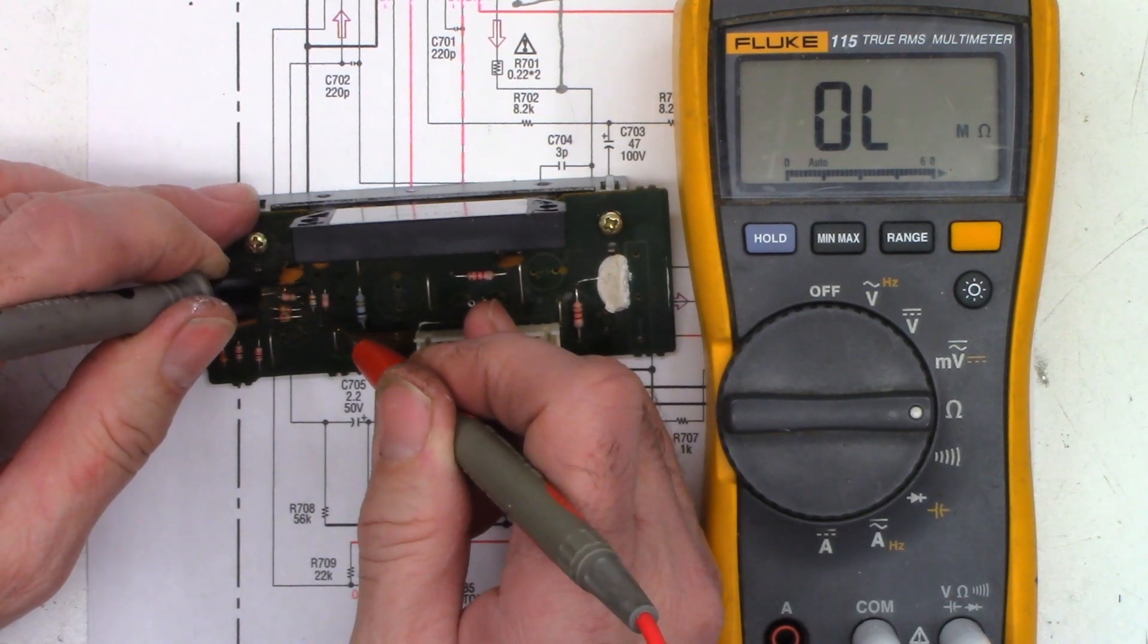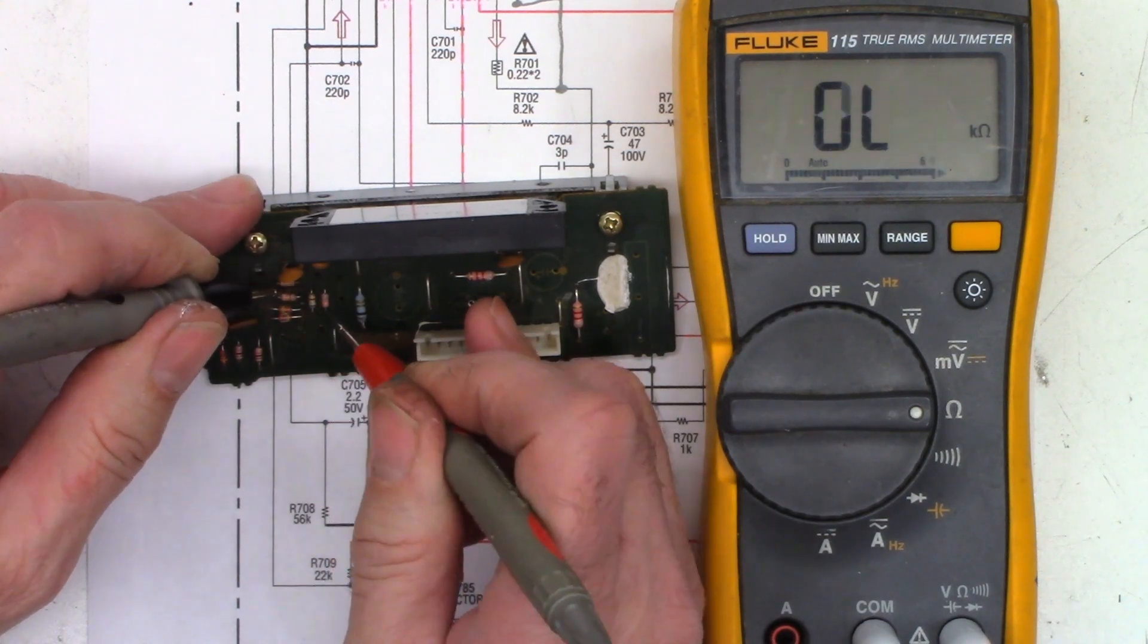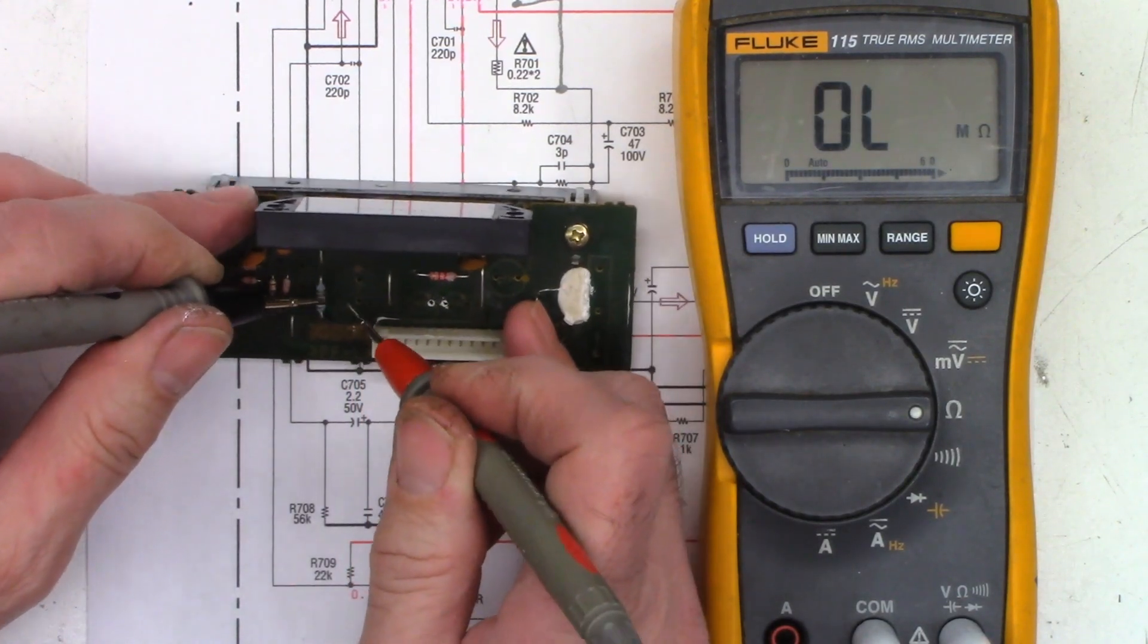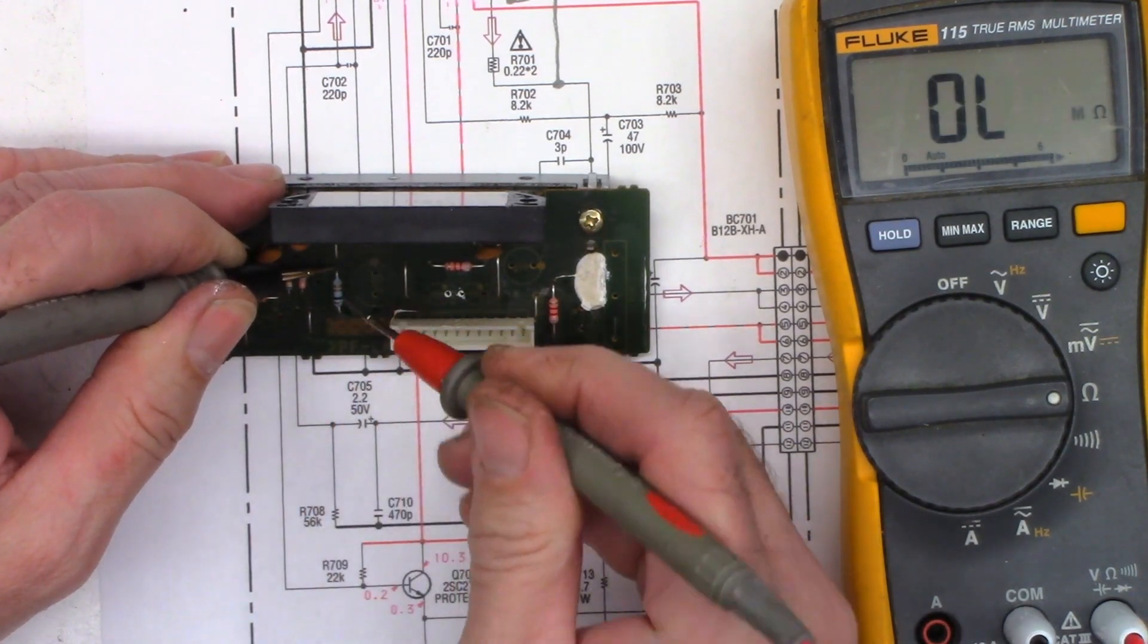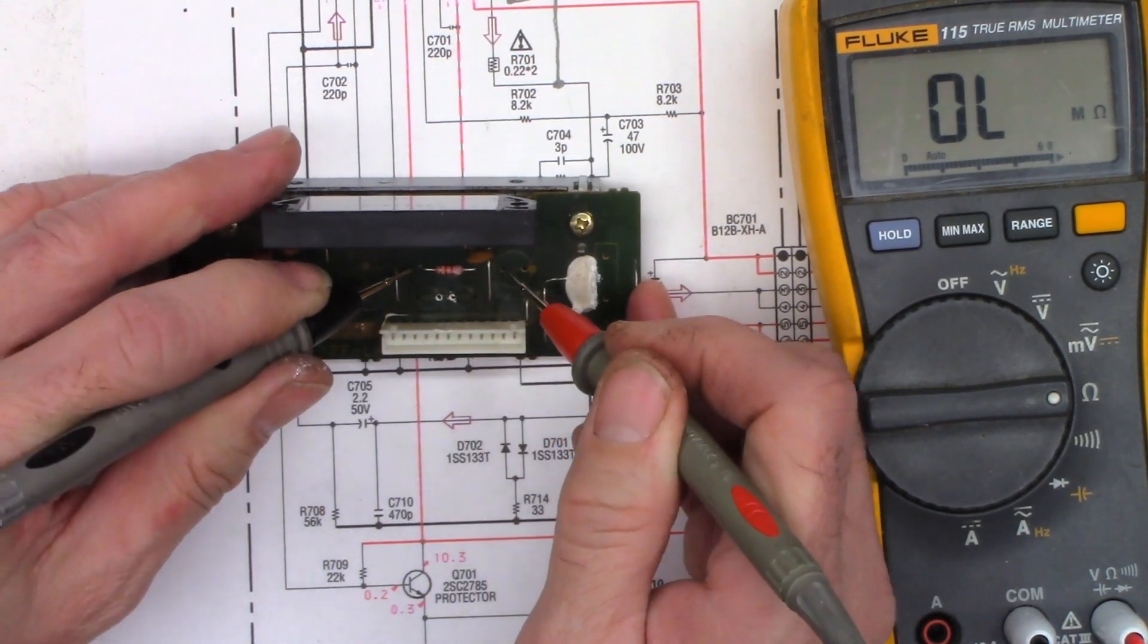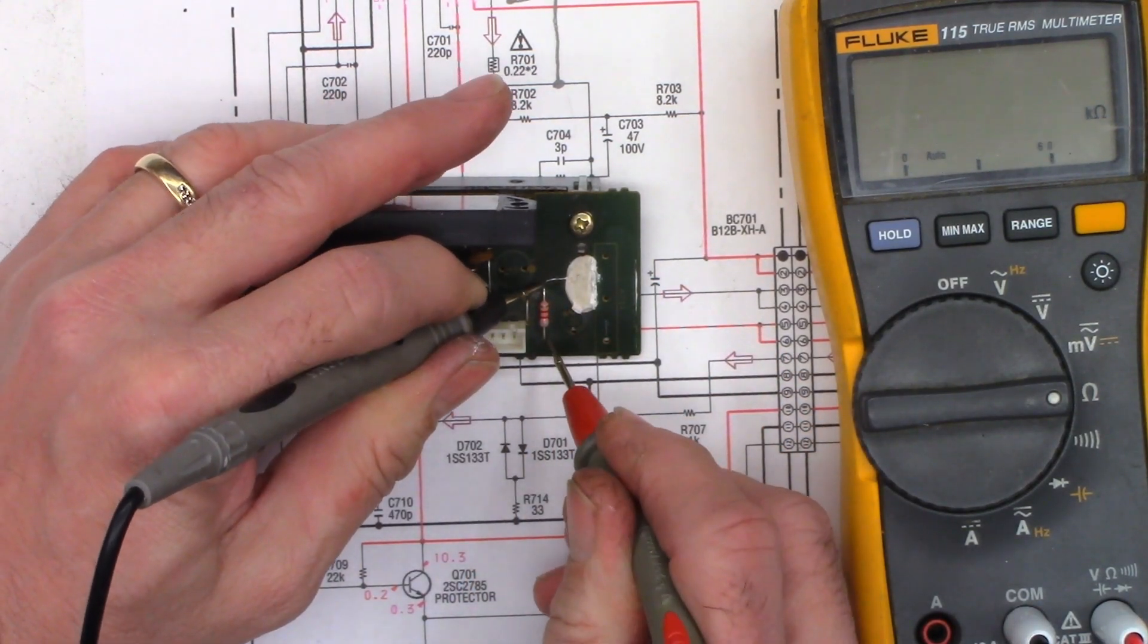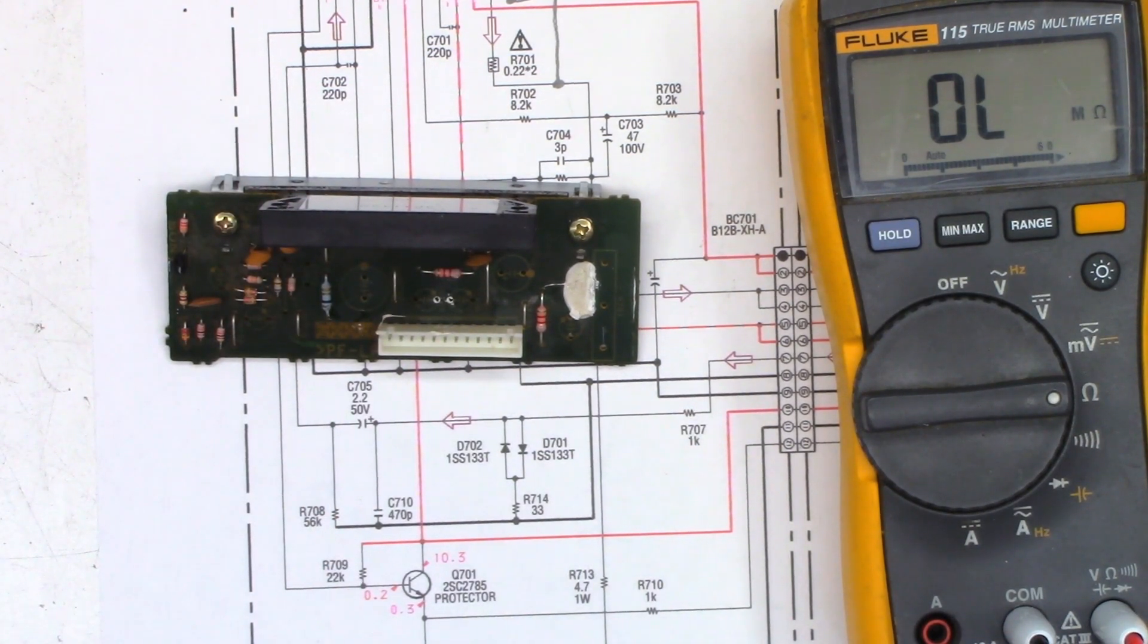And this one is a 56k, right on the money. I already tested this one, it's a 1 ohm, and on this meter it tests 1.5 because I do have some lead resistance because of the cheap Chinese leads that I'm using. And this one looks like it's an 8.2k: 8.08, perfectly fine. And another one: 8.14, absolutely perfect. So all the resistors test fine.